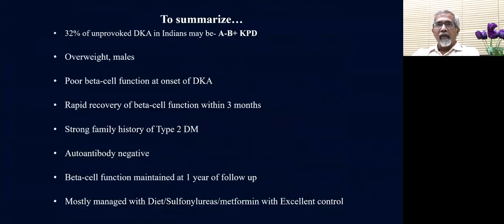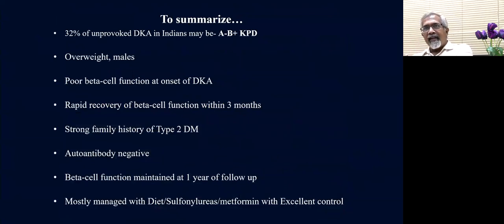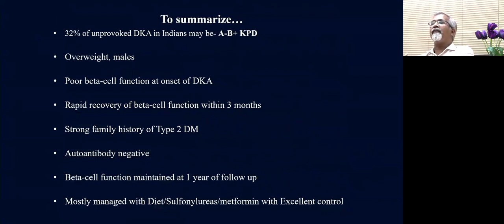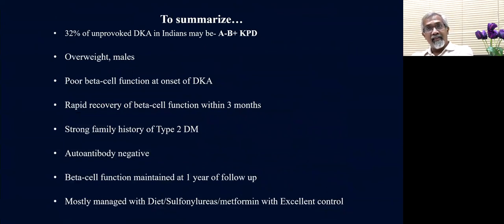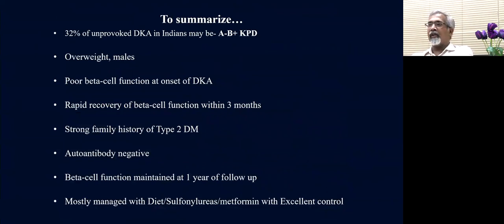Insulin was discontinued in all patients who were GAD antibody negative. The baseline characteristics showed they tended to be overweight, more common in males, and there was a strong family history of type 2 diabetes. This condition exists in India and we need to think about it in our younger patients who have diabetes appearing like type 1 in the initial phase.